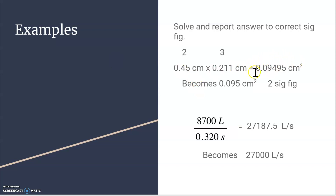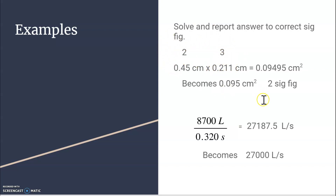First do the math — this is what my calculator shows. Then go back and count significant figures. 0.45 has two, and 0.211 has three significant figures. The lower of those two is two, so I round my answer to two significant figures. Counting left to right — one, two — I stop at the four. What's after the four? A nine, so I round up. It becomes 0.095 centimeters squared.